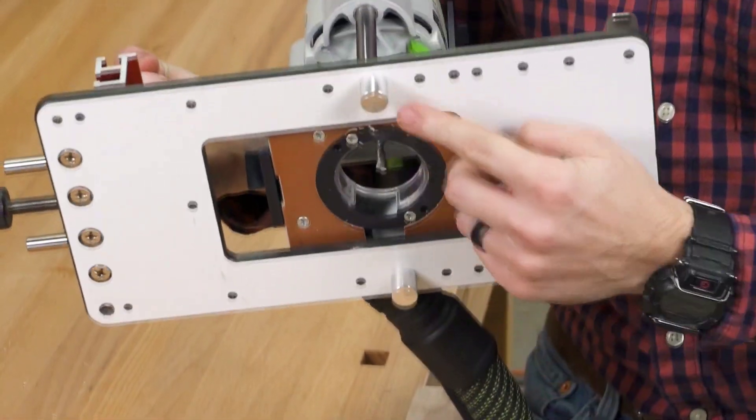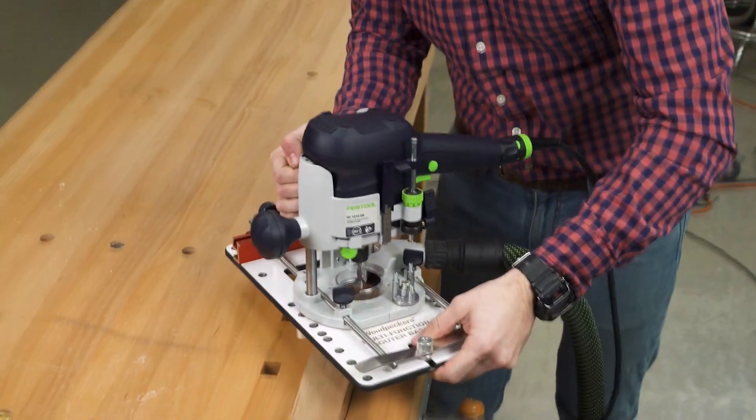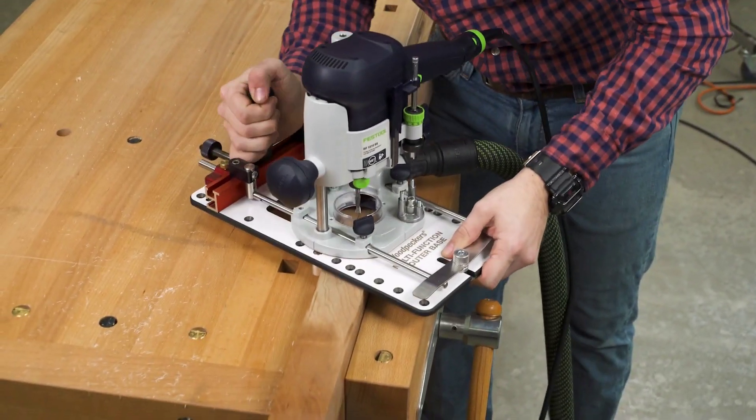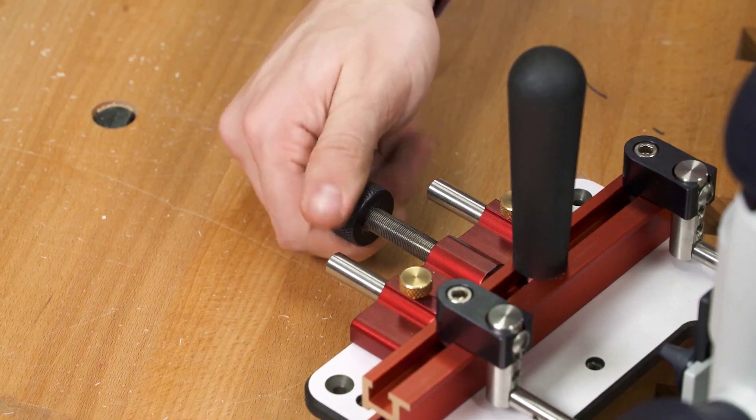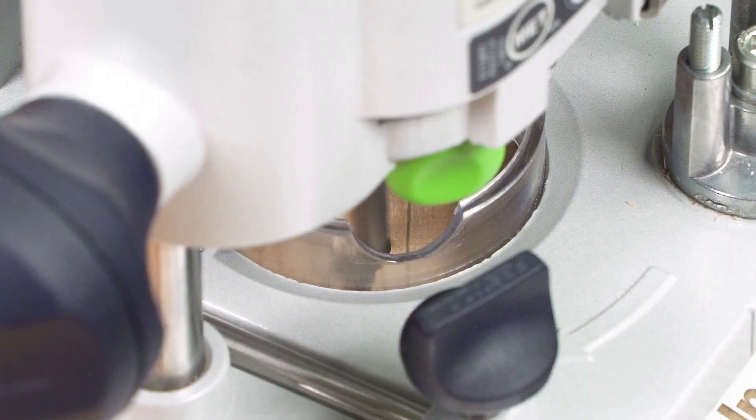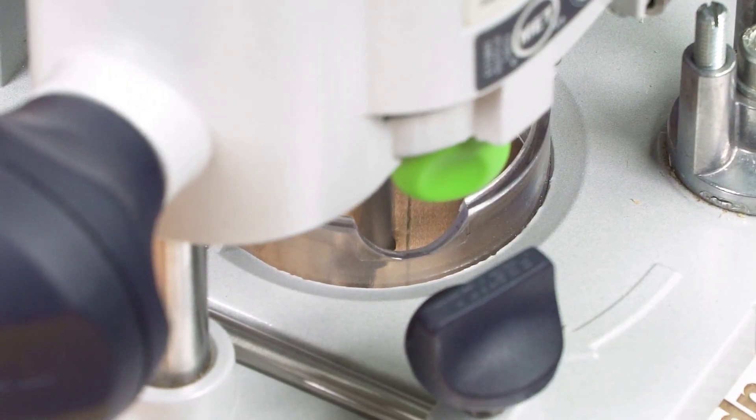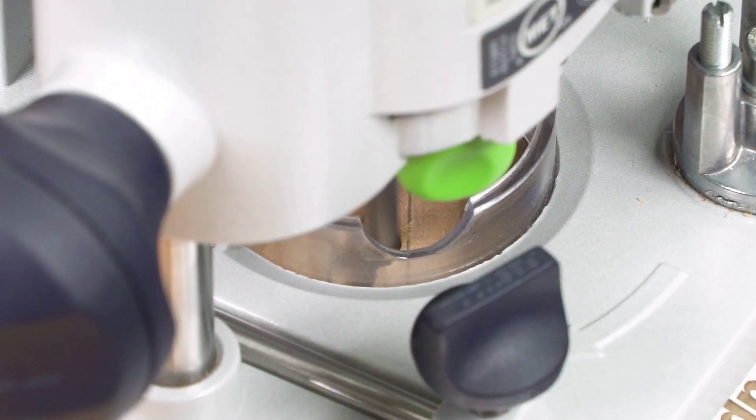There's also a set of mortising pins that make it simple to route in the edge of your stock. With the Micro-Adjuster, you can accurately cut mortises wider than your router bit or position your mortise offset to one side or the other.